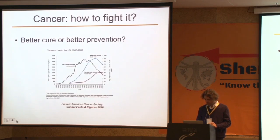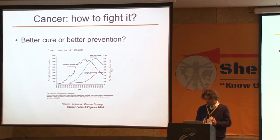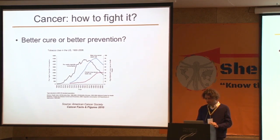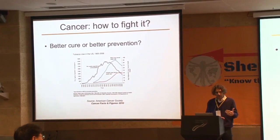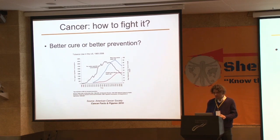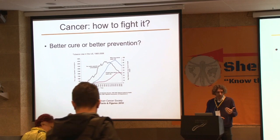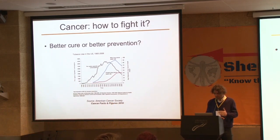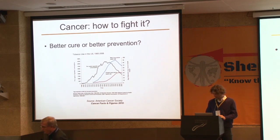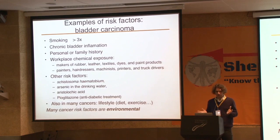The first question to ask is how we should approach the problem of cancer: should we focus our attention on cure or on prevention? This figure shows that the most effective strategy for decreasing the number of cancer deaths in lung cancer has been to fight against the risk factors, and not to develop better drugs. Prevention was very, very efficient — and this is probably quite general to many cancers.